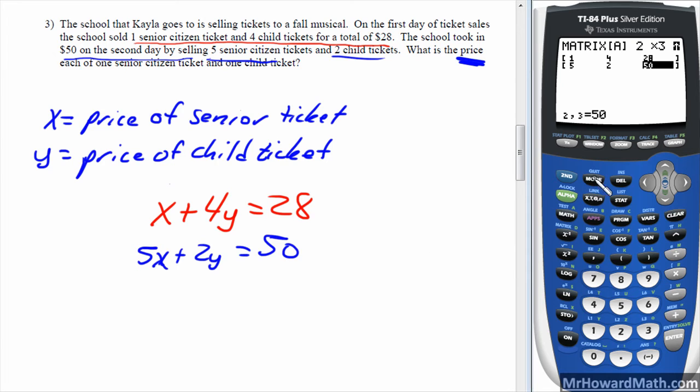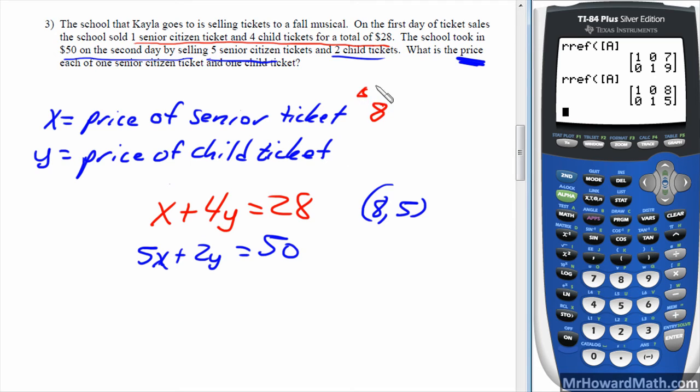Now that I have matrix in from the previous example, I can actually arrow up, highlight it, hit enter twice, and shortcut that a little bit. I don't have to go through the other steps. So that tells me that the ordered pair is 8, 5. So the price of a senior ticket is $8. And the price of a child ticket is $5. So that answers that one. Let's go on to the last example.